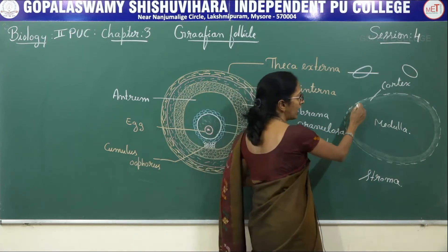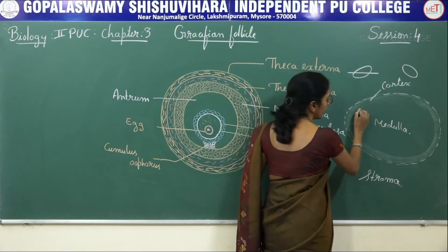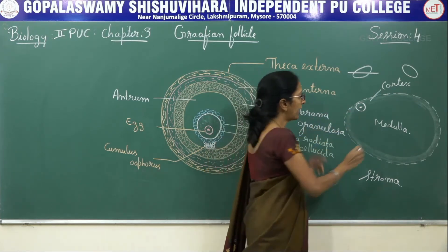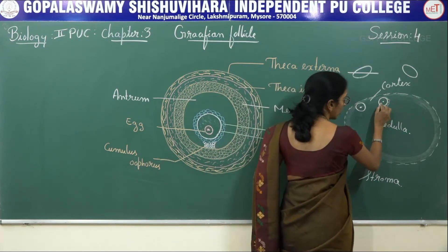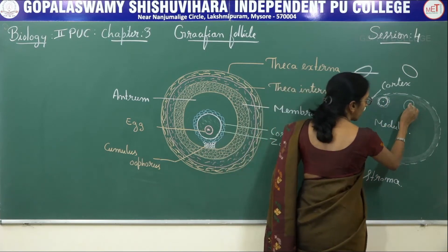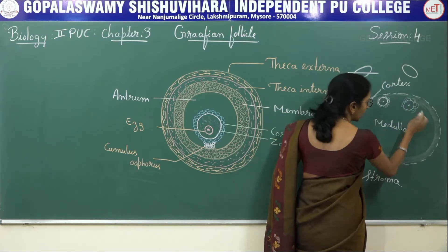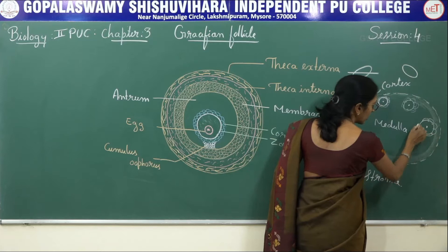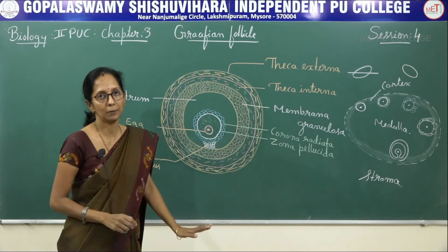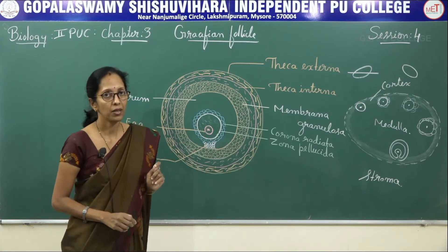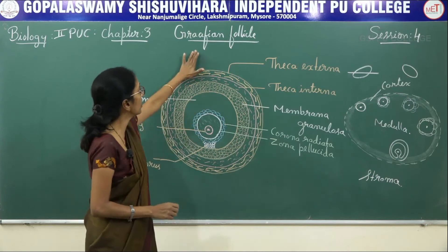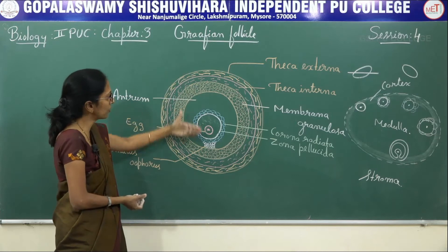The germinal epithelial cell undergoes both mitotic and meiotic division, resulting in the formation of a female gamete — the egg, ovum, or ootid. This egg is surrounded by a number of follicular cells and this is said to be the primary follicle, which in turn is surrounded by more follicular cells to form the secondary follicle, and finally it is converted into the tertiary follicle. The mature ovarian follicle is said to be the graafian follicle.